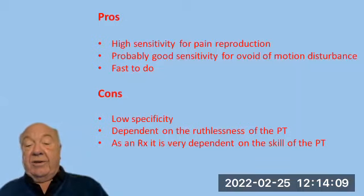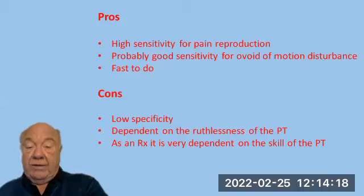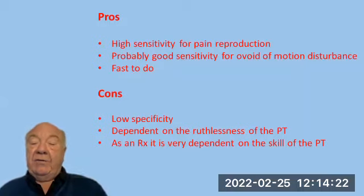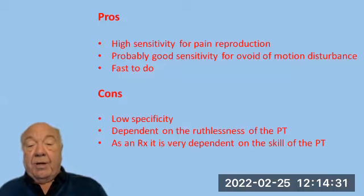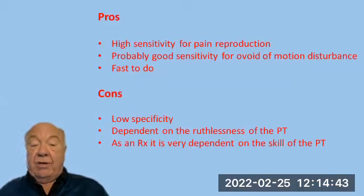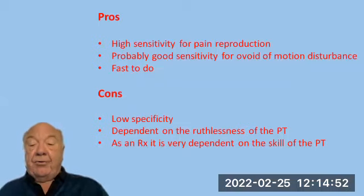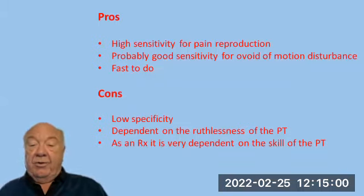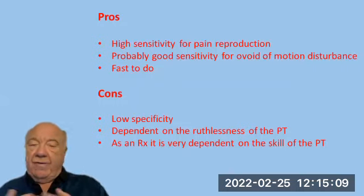Cons: low specificity — though I don't think that's really a con since we're using it as a sensitivity test and don't care much about specificity. The exception may be the elbow, where it may be specific for different parts of the elbow complex. The test is very dependent on the ruthlessness of the PT. Going back to the dark room analogy, leaning against the wall is uncomfortable for the patient, so you have to be ruthless enough to discount the discomfort, stay against the wall, and not be too concerned with comfort — because these are not comfortable tests when done properly. For treatment, success is very dependent on the skill of the PT: ruthless for testing, but very gentle for treatment, otherwise you can flare these patients up considerably.